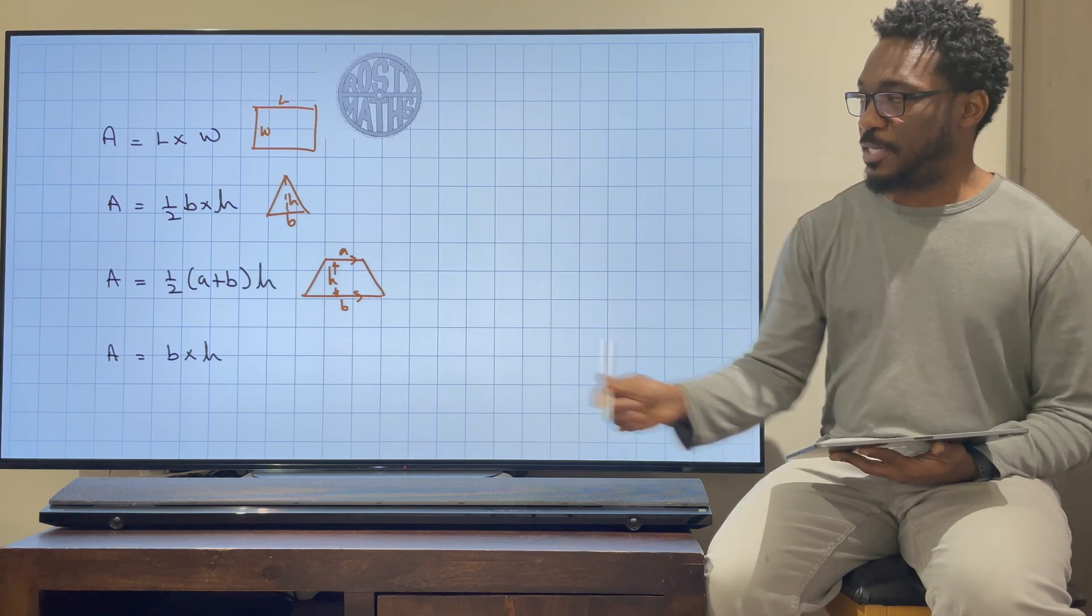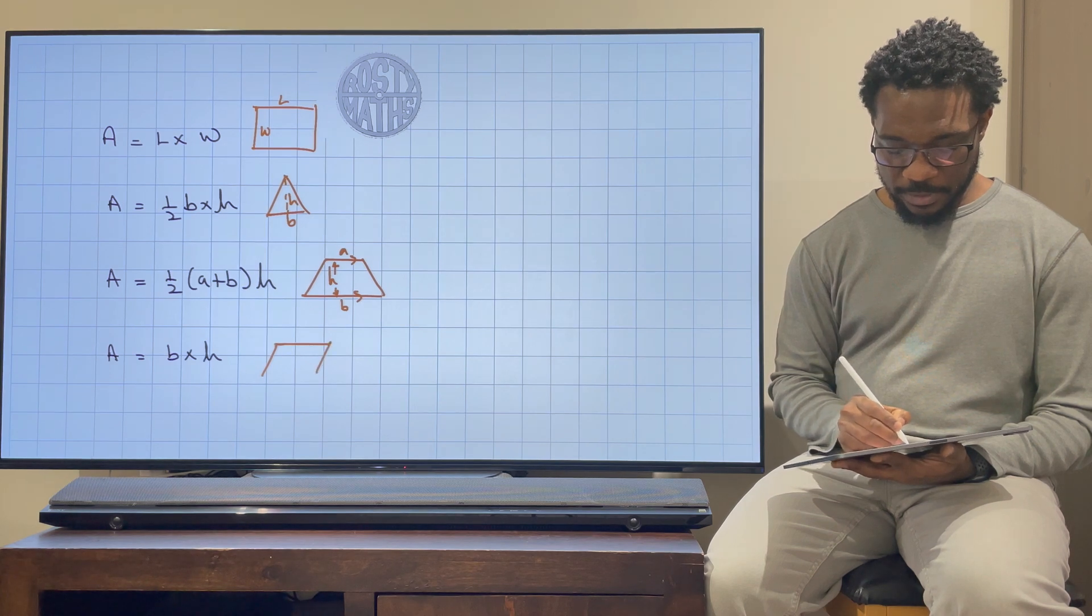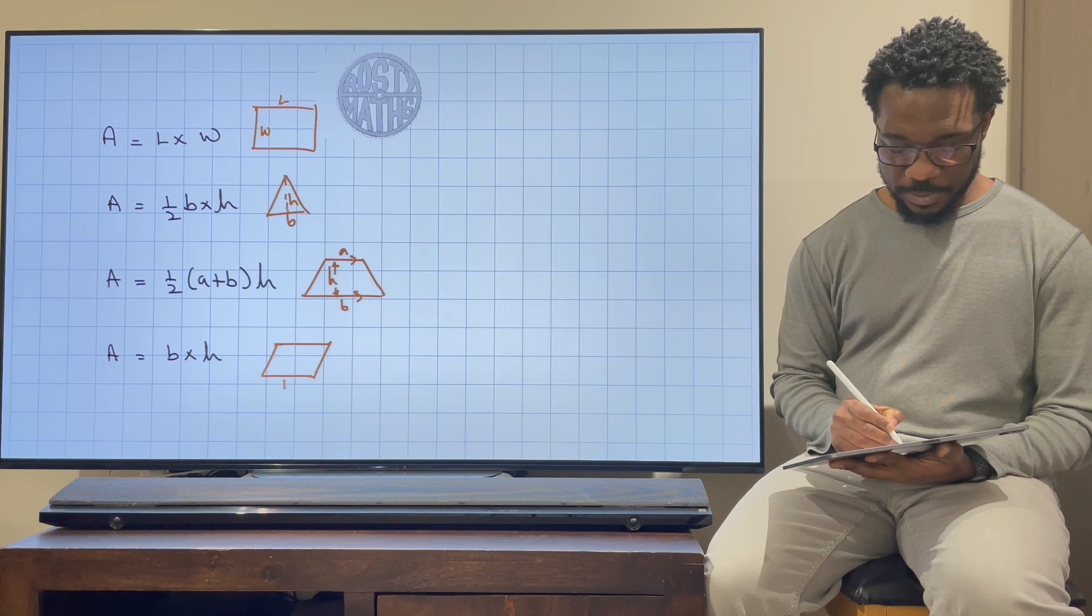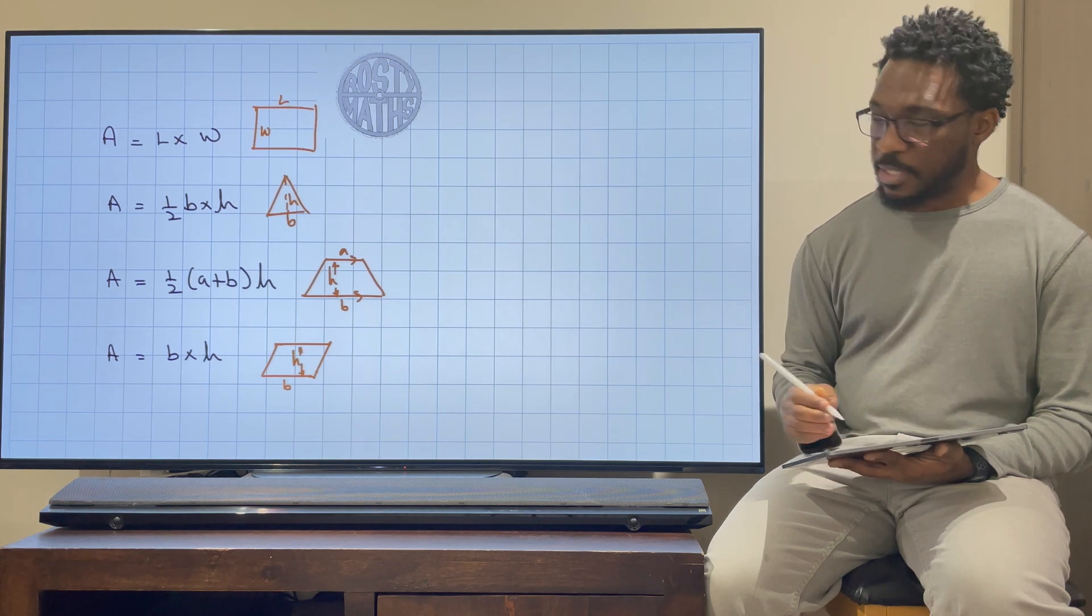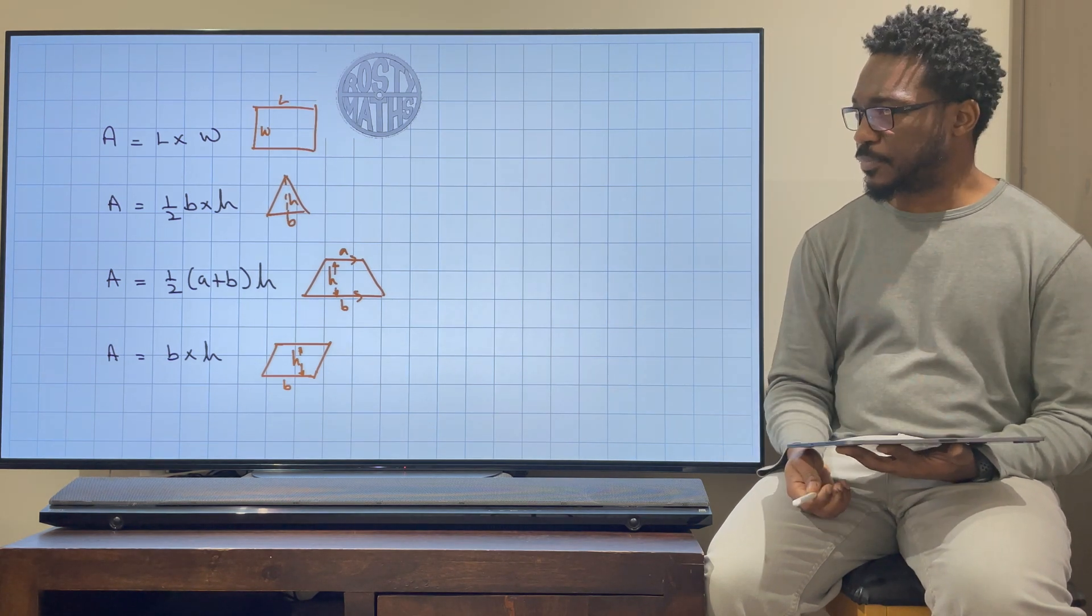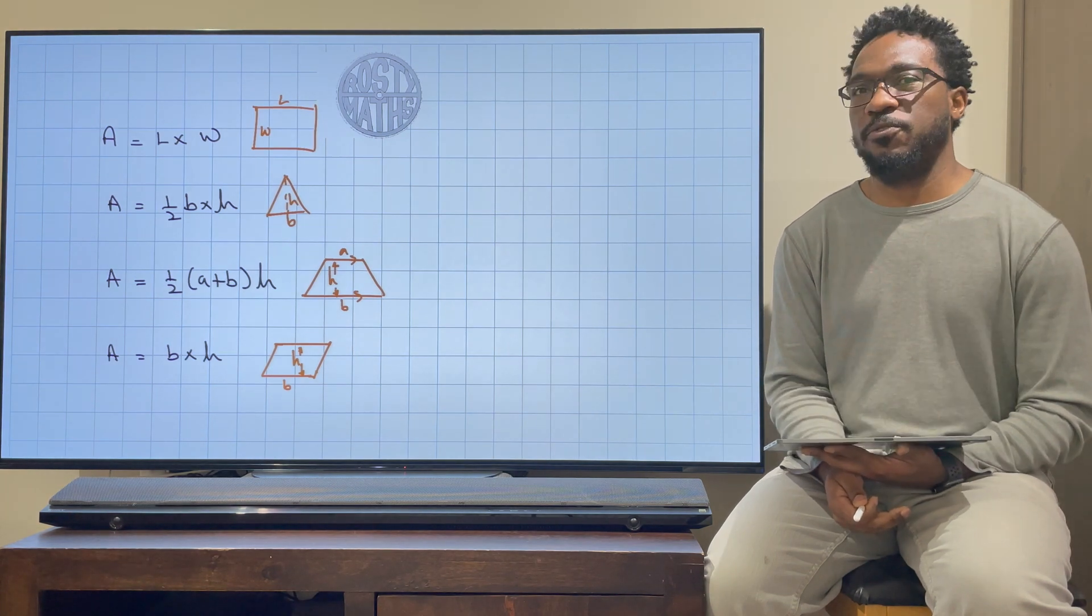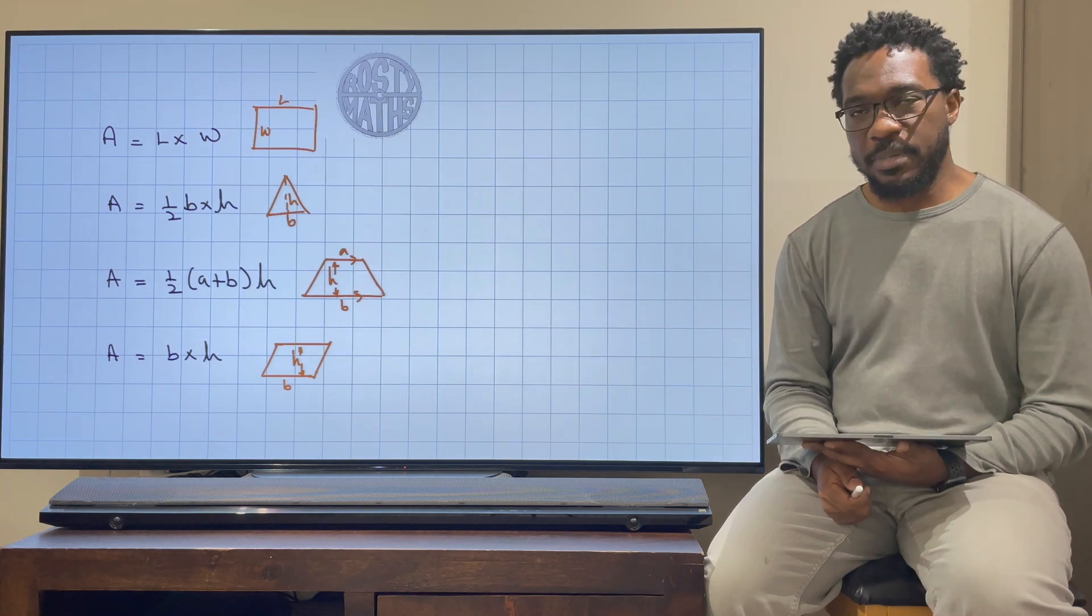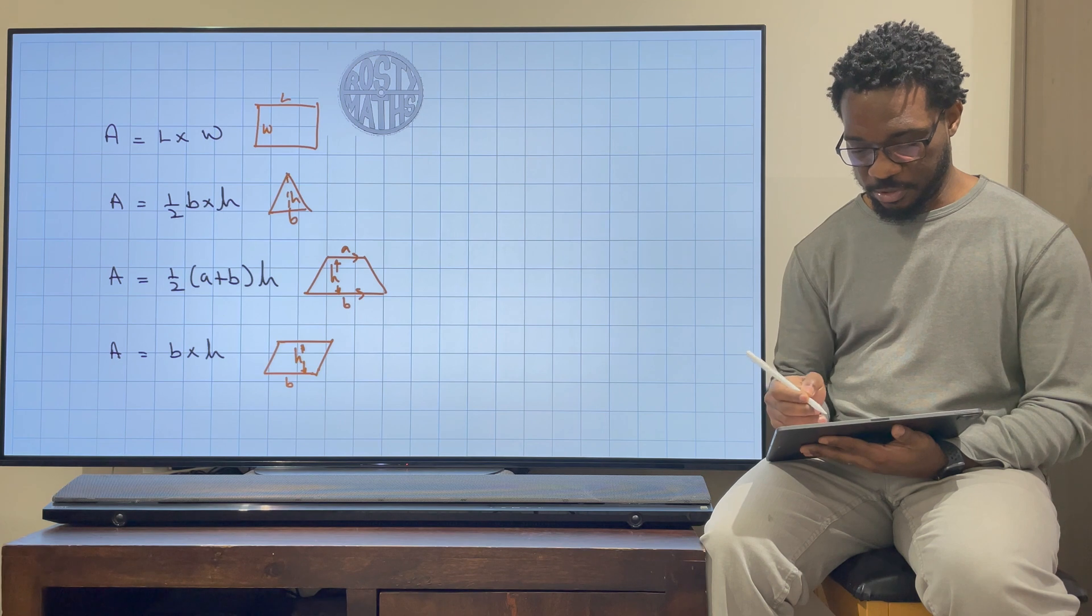And then finally down the bottom here, you might know this formula. It's the area of a parallelogram, and so we've just got base times height here. Okay, so there we go. So these are some formulas that we already know. What about formulae that we can make up? Because we can make up some formulae. These are the common ones everybody knows, but we can make up some formulae.